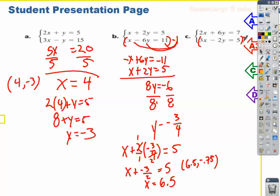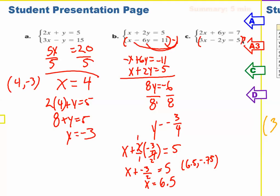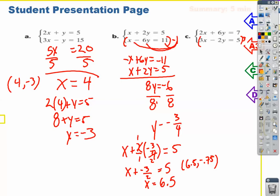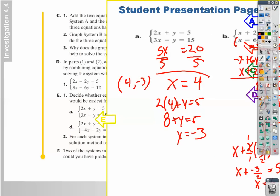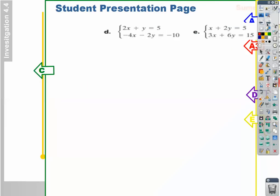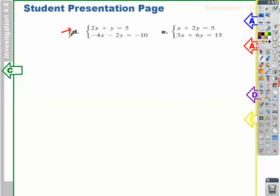Now there is one problem I do really want to show you before we stop this. Let's talk about this one right here, d. I don't have opposites. I need to make opposites. I notice that the opposite of negative 2y is positive 2y. So let's just multiply all this by 2. So I get 10 equals 2y, and I get 4x. Let's add straight down. So I get 0, 0 equals... Wait a second. This is called an identity.